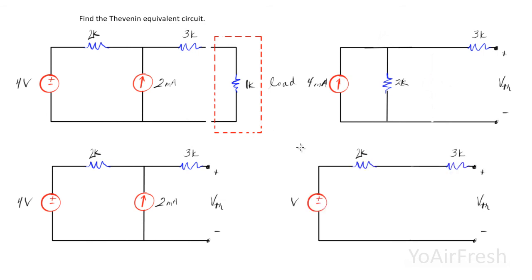So what I've done is another source transformation, changing it from a current source back to a voltage source, and if you multiply 4 millis times the 2k, you get 8 volts. So 8 volts is our new voltage.